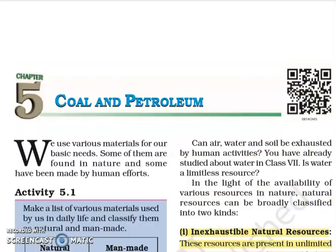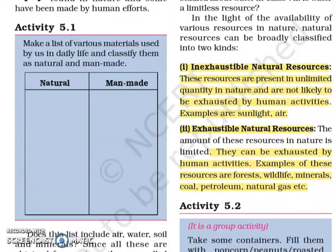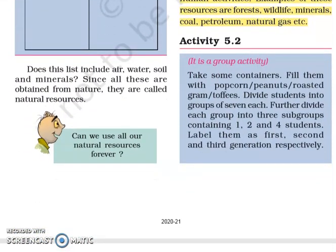Activity 5.2 — it is a group activity. Take some containers and fill them with popcorn, peanuts, roasted gram, toffees — some edible things. Divide students into groups of 7 each. So if 35 students are there, you have 5 groups. Further divide each group into 3 subgroups containing 1, 2 and 4 students.